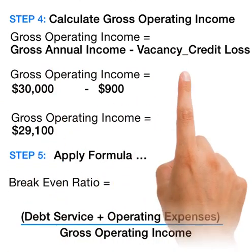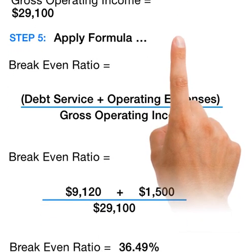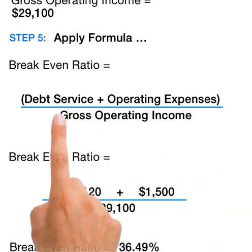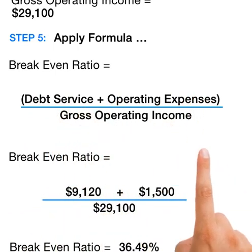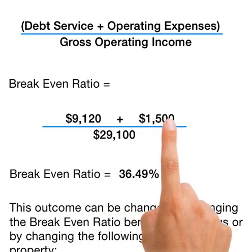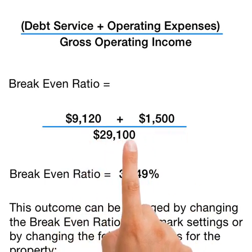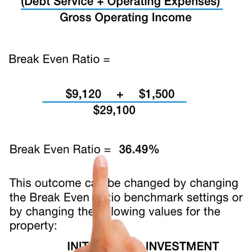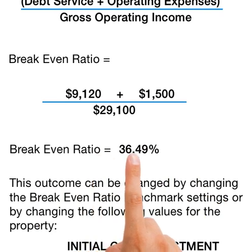Then we simply apply the formula of the break-even ratio, which is debt service plus operating expenses divided by gross operating income. So our annual mortgage payments of $9,120 plus operating expenses of $1,500, divided by the gross operating income of $29,100, gives us our result.